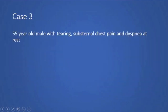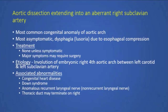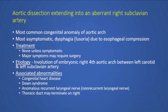Case 3 is a 55-year-old male with tearing substernal chest pain and dyspnea at rest. CT angiogram axial slices demonstrate a clear aortic dissection extending into an aberrant right subclavian artery, which is the most common congenital anomaly of the aortic arch. Mostly asymptomatic, but can cause dysphagia lusoria due to esophageal compression. It's associated with congenital heart disease, Down syndrome, anomalous recurrent laryngeal nerve, and a thoracic duct that may terminate on the right.